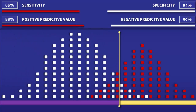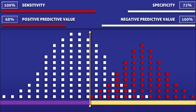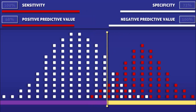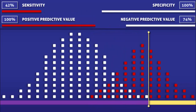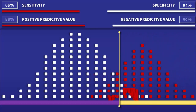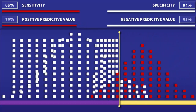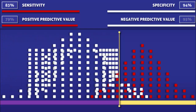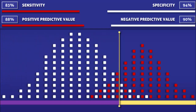As we complete this lecture, let's quickly review the core concepts. Shifting the cutoff level to the left increases the sensitivity and the negative predictive value, while shifting it to the right increases the specificity and the positive predictive value. An increase in prevalence correlates with a higher positive predictive value, while a decrease in prevalence correlates with a higher negative predictive value. In regards to sensitivity and specificity, both are independent of any changes in prevalence.